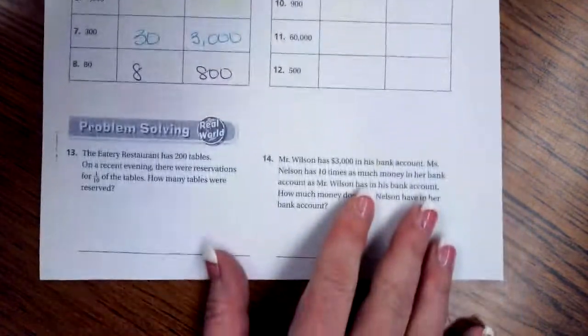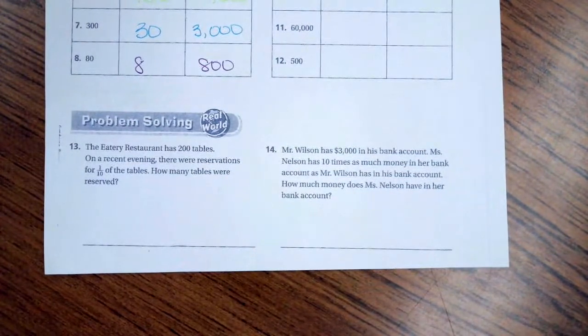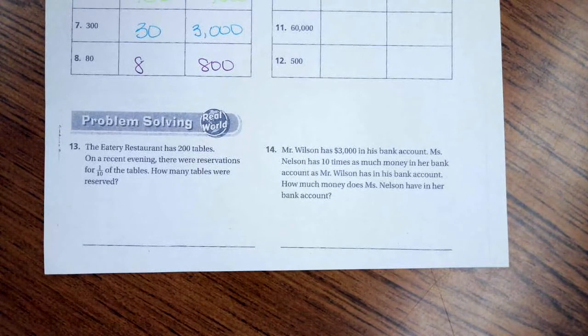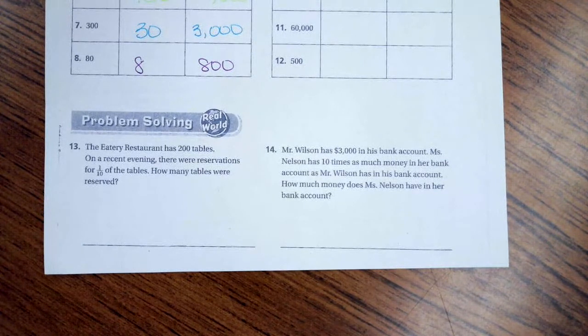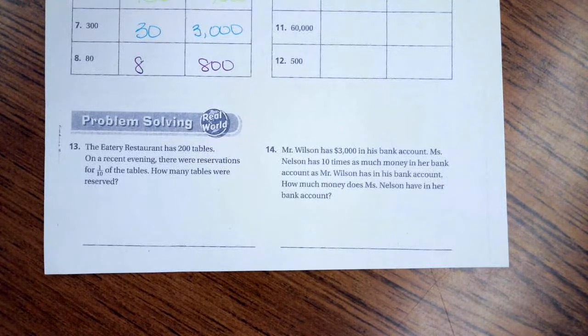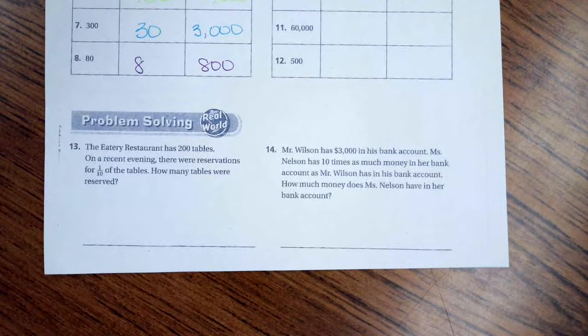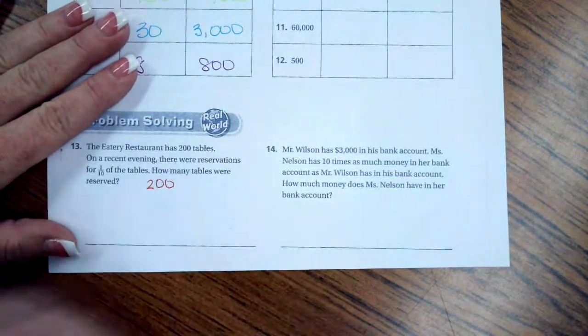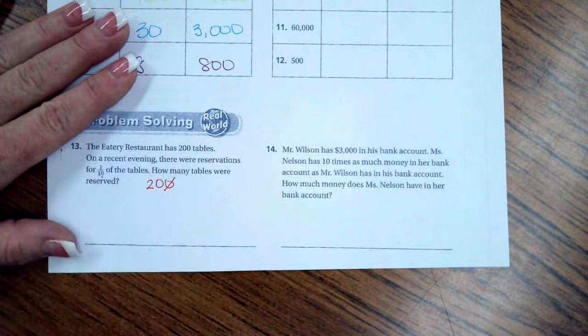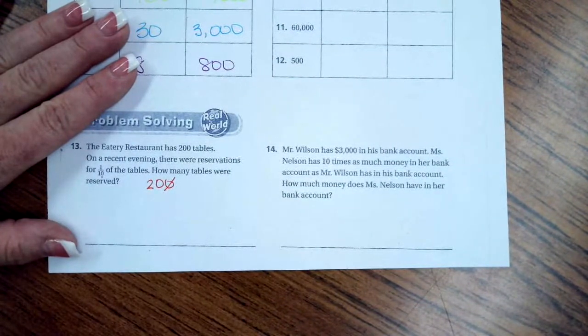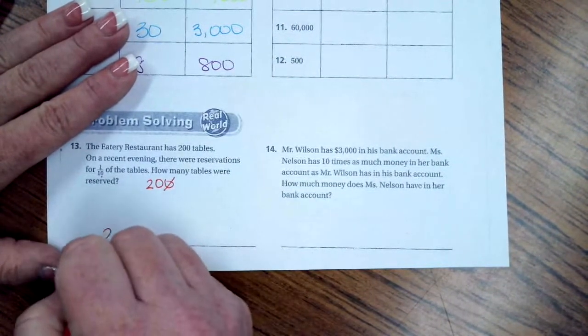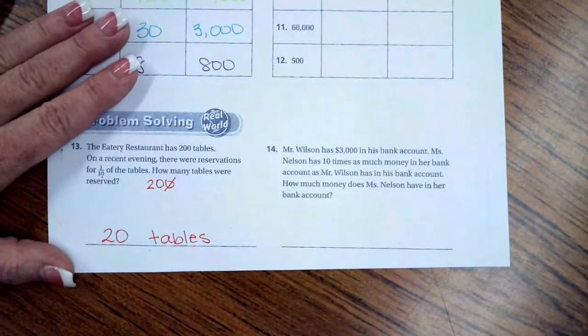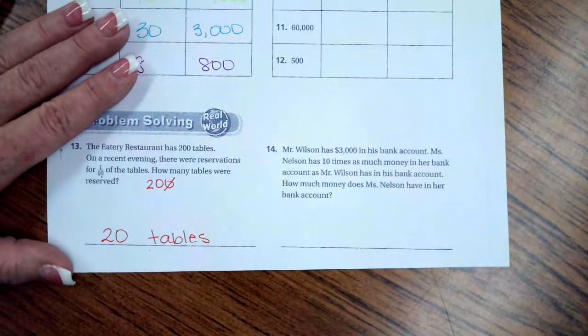We're going to go down to the word problems. It says, the eatery restaurant has 200 tables. In a recent evening, there were reservations for one tenth of the tables. How many tables were there? What is one tenth of 200? So I'm going to take that 200, and if I had to divide it by a tenth, I would be taking one zero off because there's one zero on that 10. So that gives me 20, and we're going to label it tables. Word problem, word answer.